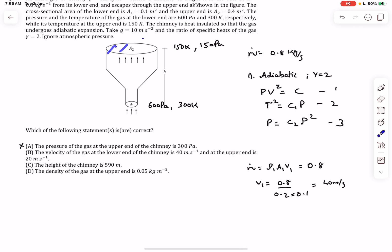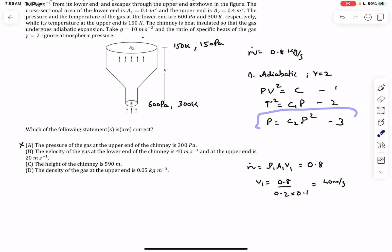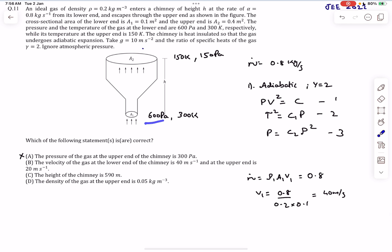We know the area of cross section at the upper end but we are missing the density at the upper end. If we can figure out the density at the top, we'll get the velocity as well. We can get that from equation 3. The pressure is directly proportional to the square of the density. As the pressure becomes one-fourth, the density becomes halved.